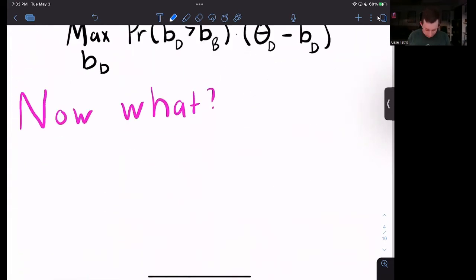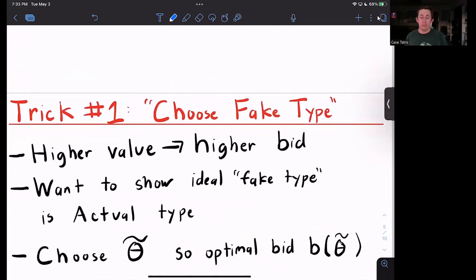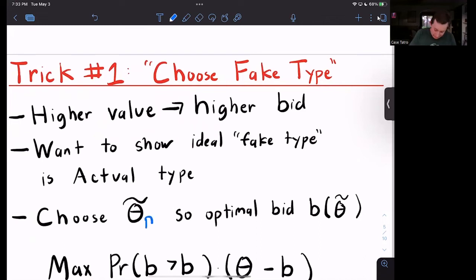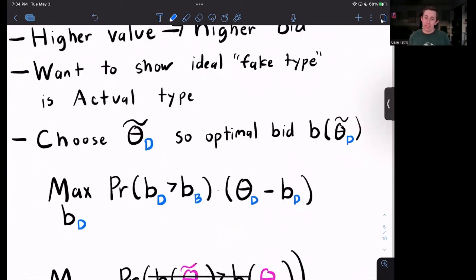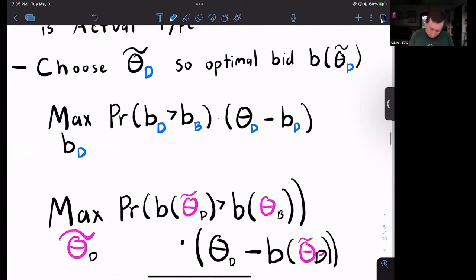What is the first trick? Rather than choosing a bid, Dave is going to pretend to have a certain valuation. The reason we're doing this trick is because we know that if I, as Dave, value the piece of art higher, I'm willing to bid higher. If I value the piece of art more, I want to bid higher. So now what we are trying to do through this is to show that Dave's ideal fake type or his fake valuation is his actual valuation. So we're going to choose some theta tilde D or Dave's fake type so that his optimal bid is the bid of Dave's fake type.